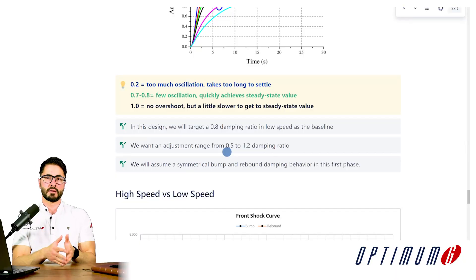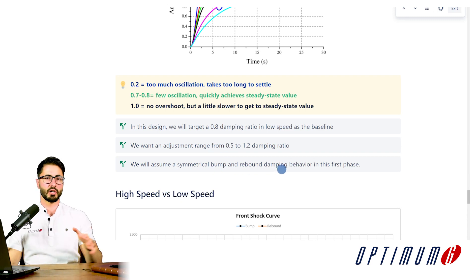And then lastly, for this first iteration, I will assume that the bump and rebound behavior will be symmetrical. So I'm just saying that I want the same damping ratio in bump and rebound. We can change that later. All of this, we are focused on the low speed characteristics of the damping.